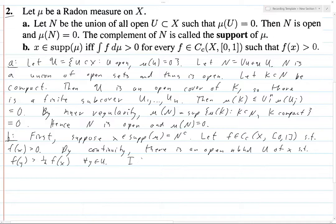So now, if it were the case that the measure of U were 0, then, since U is open, U would be contained in N, which would contradict the fact that X is in N complement.